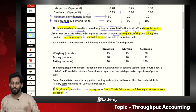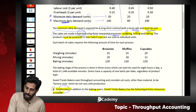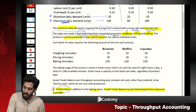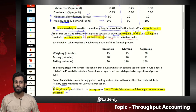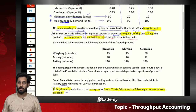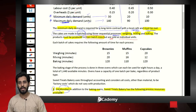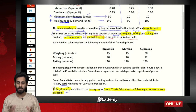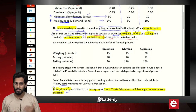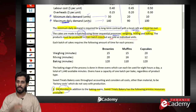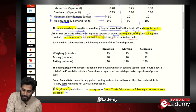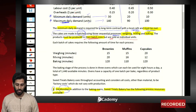In throughput accounting we are concerned with production, not sales. There are two key requirements: number one, you must meet the minimum daily demand; and number two, you must produce the cakes in batches.